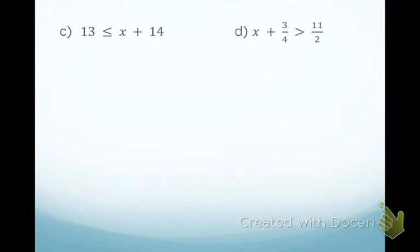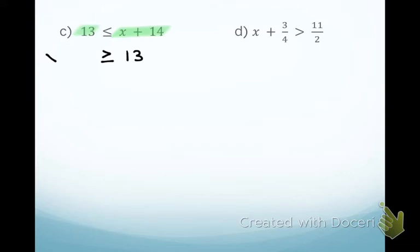Problem C looks a little different from A and B. One noticeable difference is that the variable is on the wrong side. That means I need to switch what's on the right side and what's on the left side, and you also need to switch the symbol. So instead of less than or equal to, it's going to say greater than or equal to. The 13 moves to the right side and X plus 14 moves to the left side.